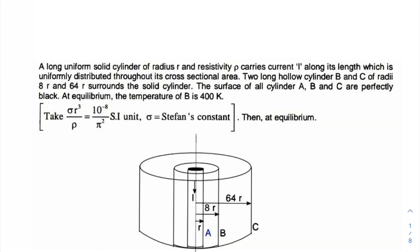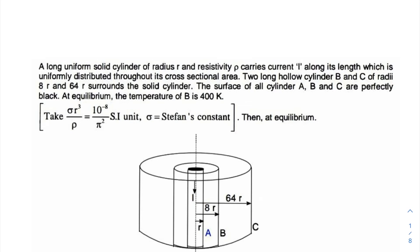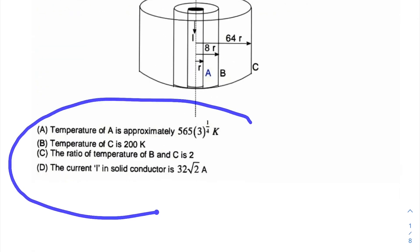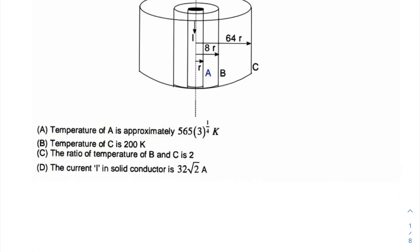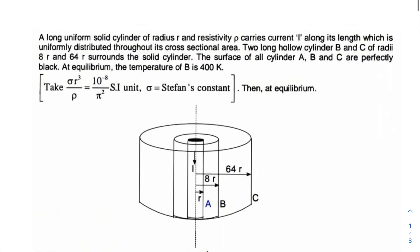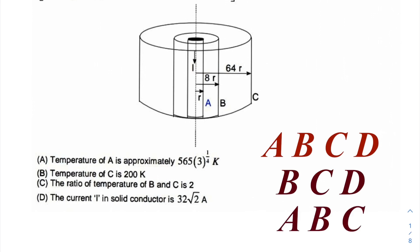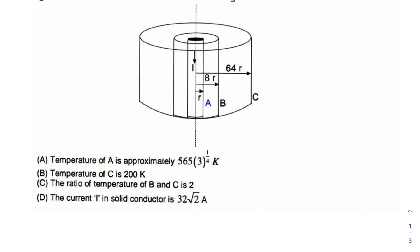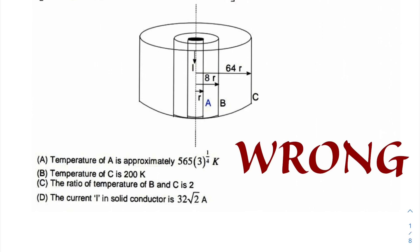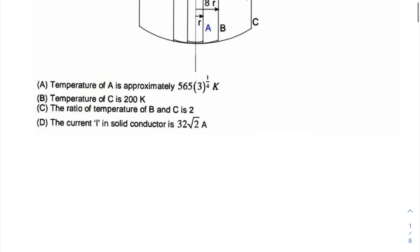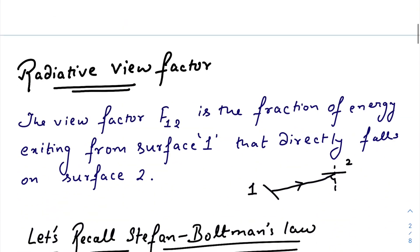I guess most of you have seen this question in my community post. If not, I would suggest you to pause the video right here and go through the question very quickly. These are the four options provided. If you are getting the correct options as A B C D, or B C D, or A B C, or any other combination, then most probably you are wrong. You need to watch the whole video.